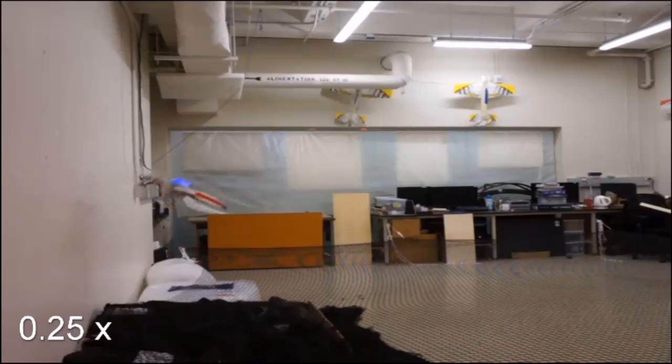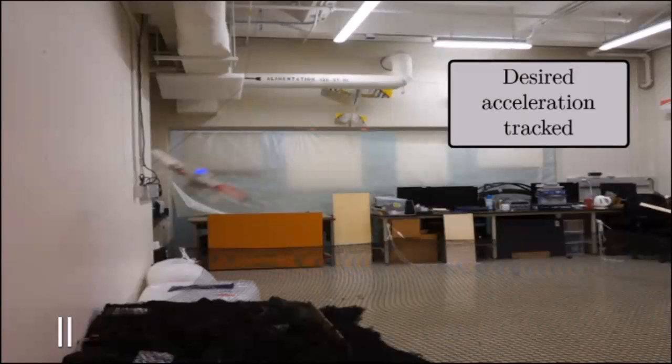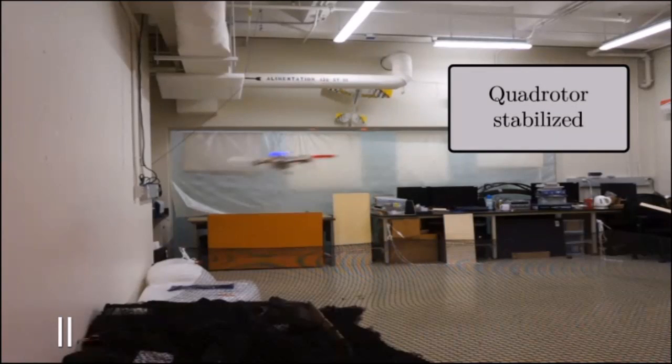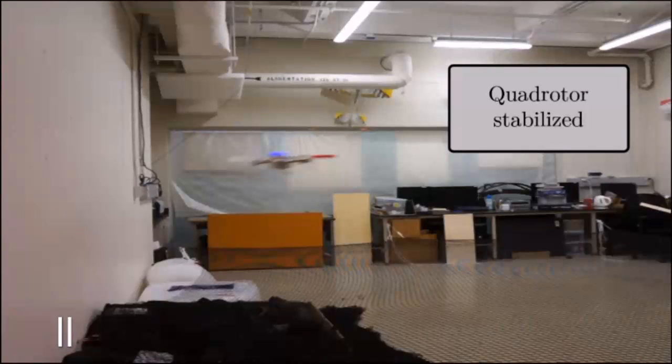An aggressive attitude control law tracks the desired acceleration vector. As soon as this tracking has been achieved, the quadrotor reorients to a level attitude and stabilizes its altitude.